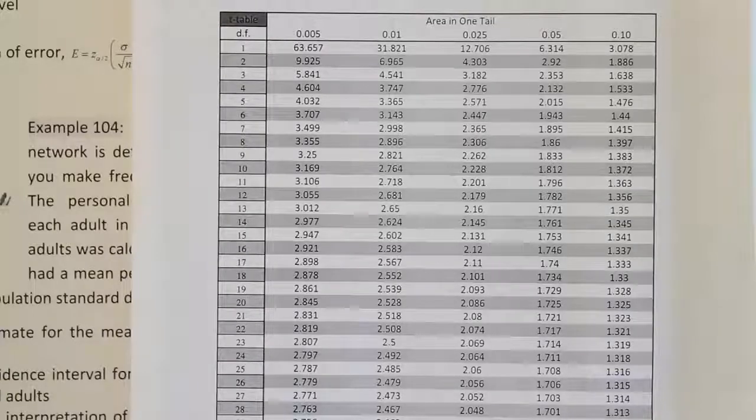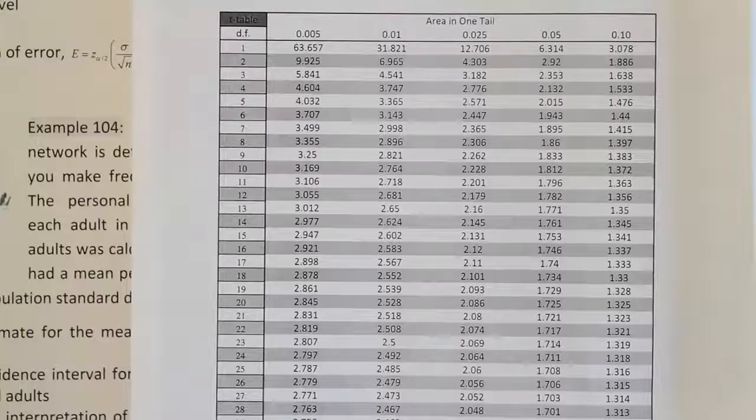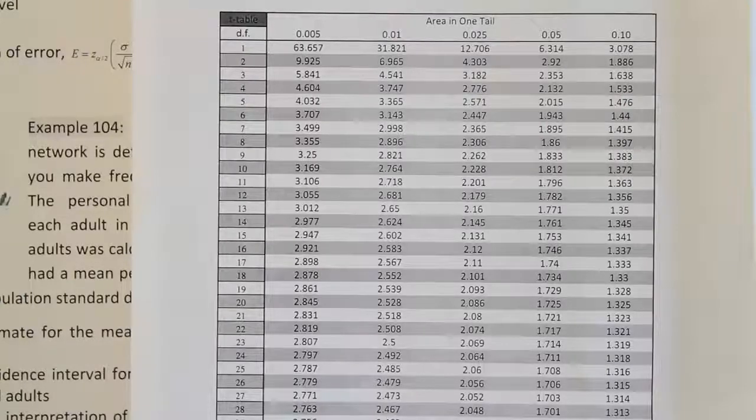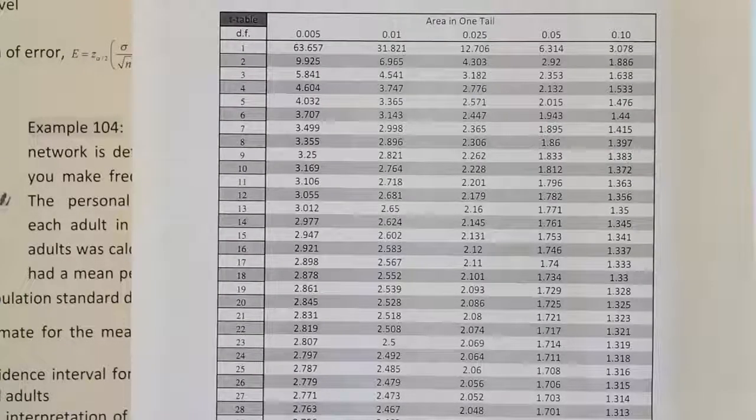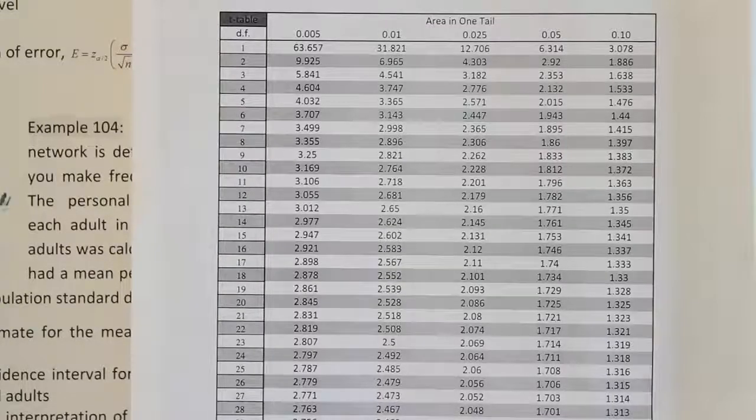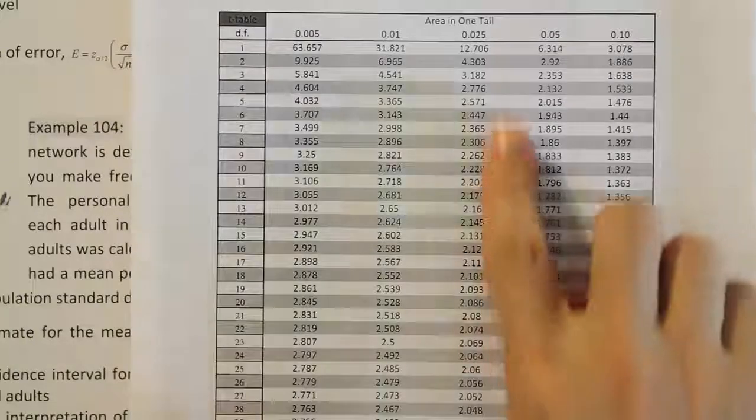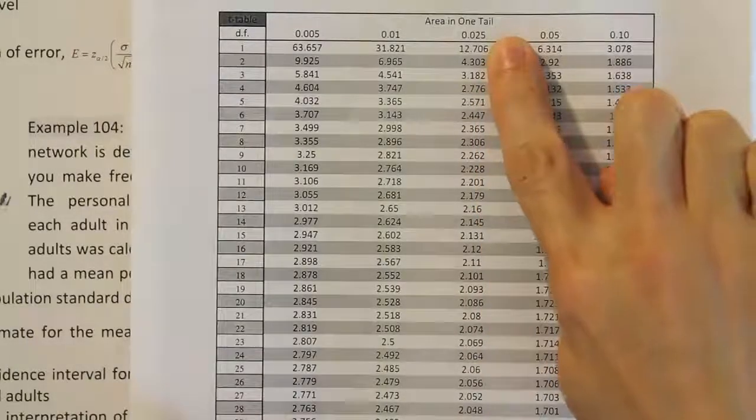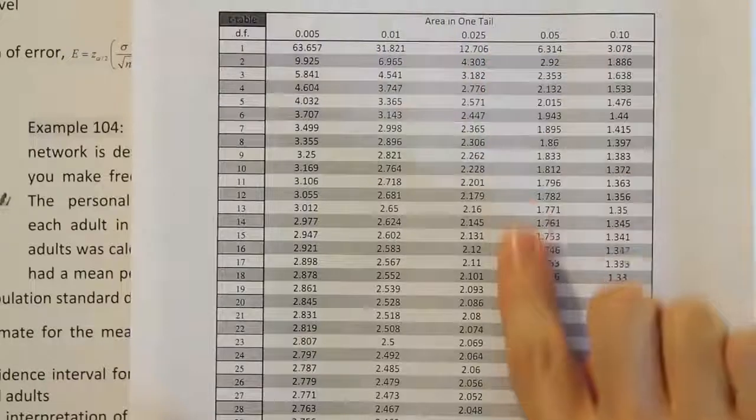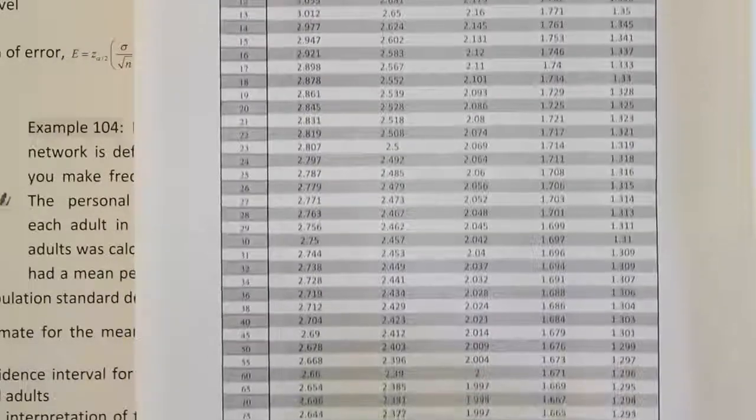In this problem, our confidence level is 95%, so our alpha is 5%. We need to take half of alpha to find Z α/2, and we'll look that up on the table. Half of alpha, if alpha is 5%, is 2.5%. That means we'll be in this column here on our table in the middle where it says 2.5%. We need to scroll all the way down to the bottom because our sample size is very large.